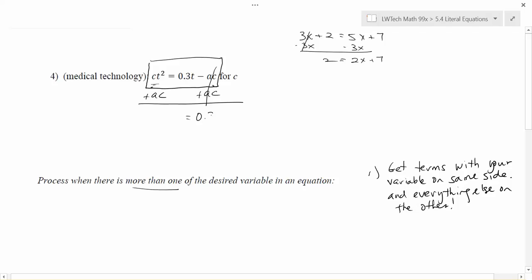On the right-hand side, I'm going to be left with just 0.3T. And on the left-hand side, I'm going to have CT squared plus AC, and I can't really put that together anymore because they're not like terms. However, I do now have condition one met, and that is that everything on the left has a C in it, and everything on the right does not have a C in it. So that's really important.